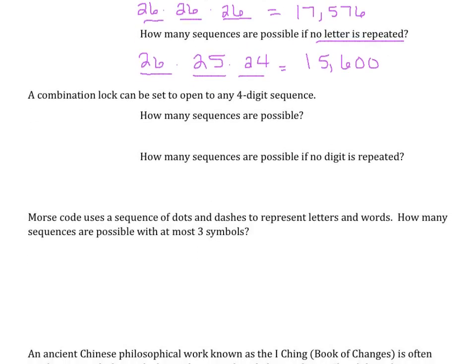A combination lock can be set to open to any four-digit sequence. How many sequences are possible? We have four digits, and there are 10 digits — 0 through 9. So we would have 10 in the first section, 10 in the second, 10 in the third, and 10 possible choices in the last, giving us 10,000 choices for the sequence.